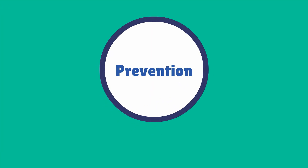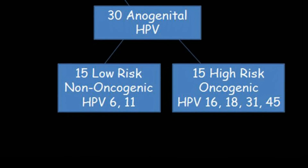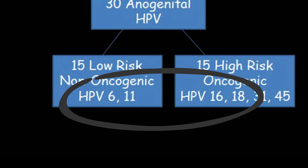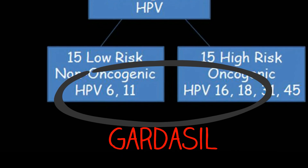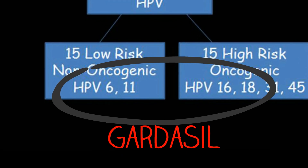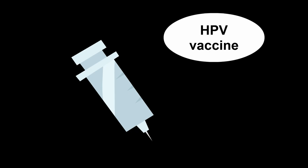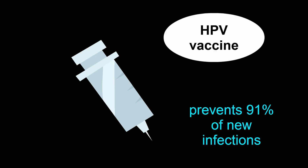In conclusion, let's discuss prevention and future directions. The quadrivalent Gardasil vaccine protects against low-risk HPV strains 6 and 11, and high-risk strains 16 and 18. This quadrivalent HPV vaccine has been shown to prevent 91% of new infections. Current HPV vaccines are indicated only for prophylaxis, and women who received the HPV vaccine should still follow regular cervical cytology screening.